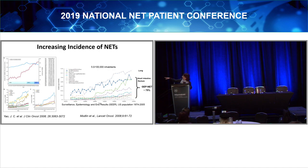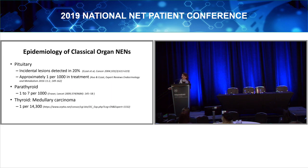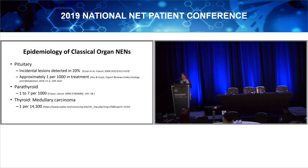Almost every single tumor type — lung, small intestine, rectum — every kind of neuroendocrine tumor we recognize is increasing in incidence. Even pituitary and parathyroid tumors, because they don't metastasize, are far more common than we used to think. When I went to medical school, people told me I would probably never see a pituitary tumor, especially not something like acromegaly or Cushing's disease. I made my whole career out of these because they're so common. And medullary thyroid carcinoma is also increasing in incidence.